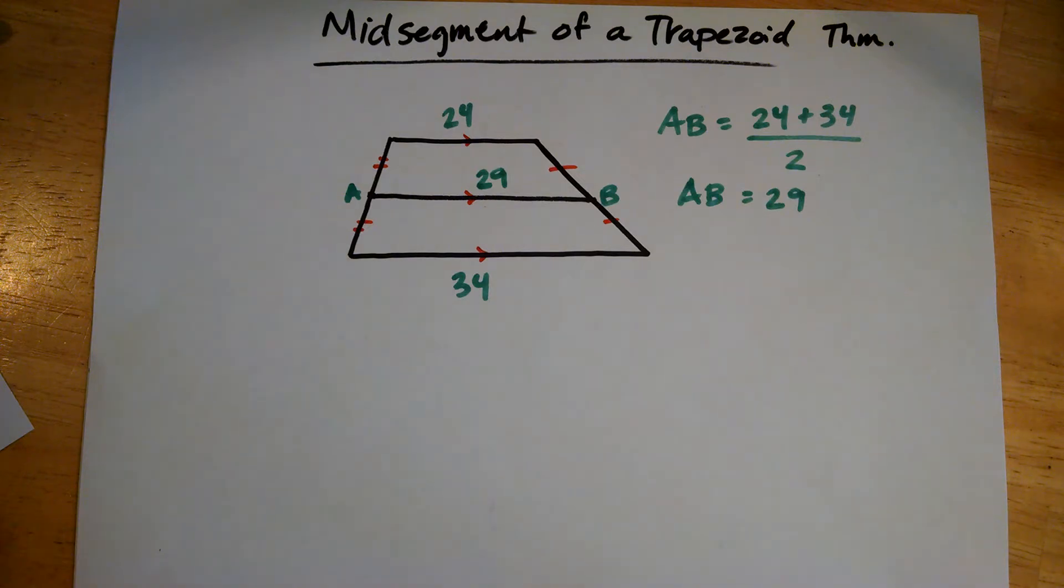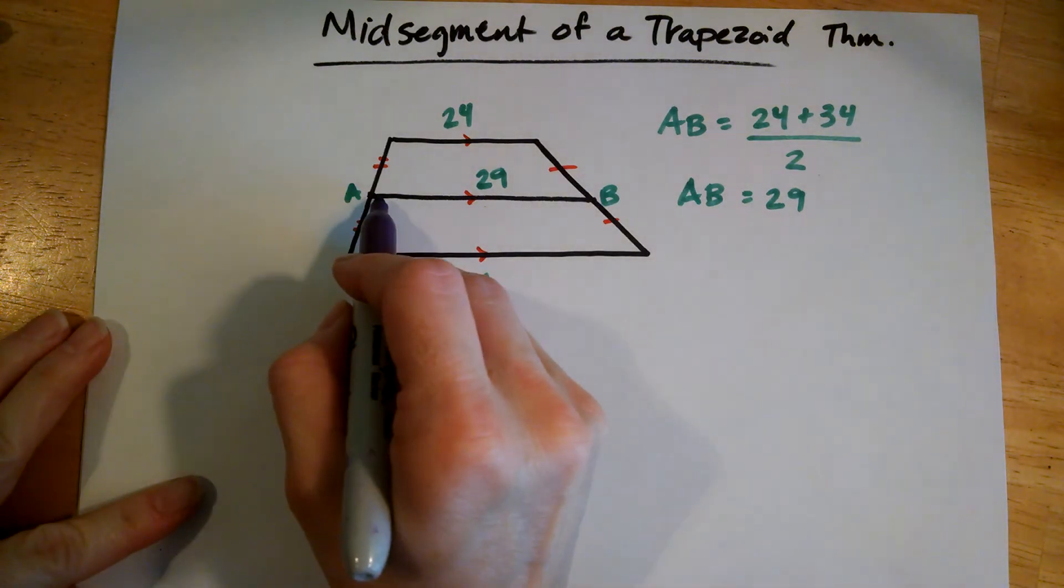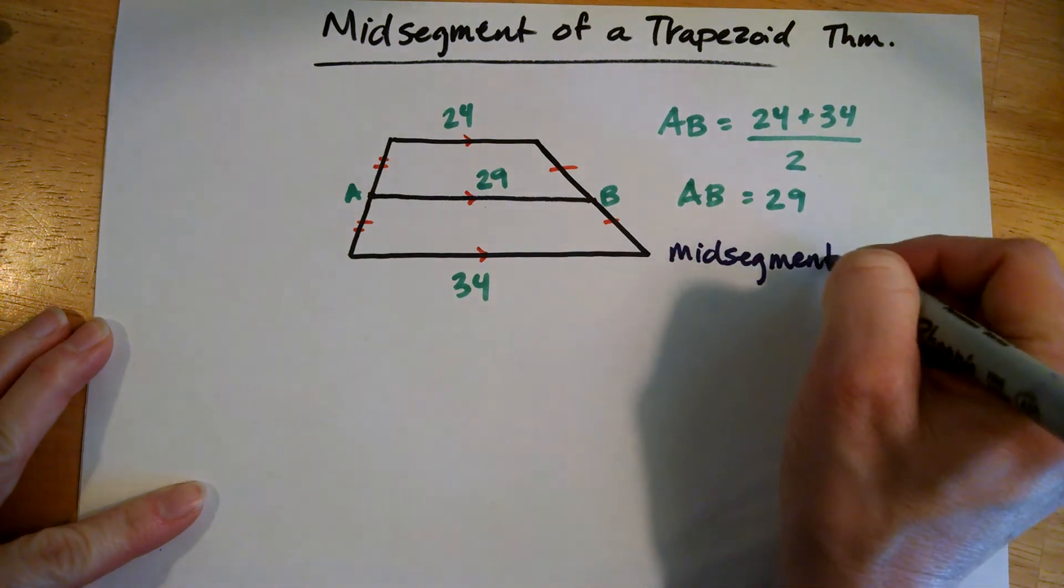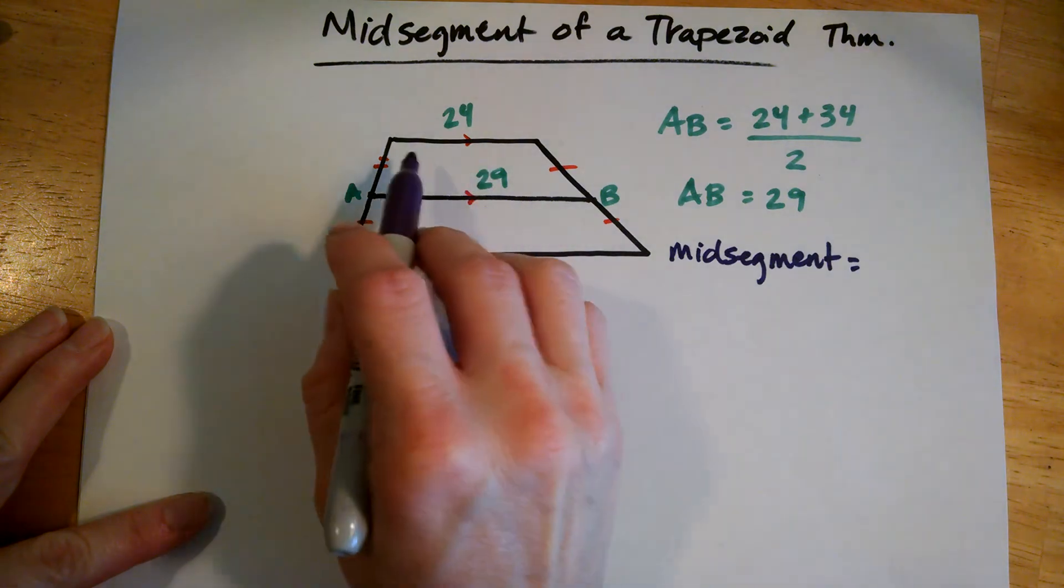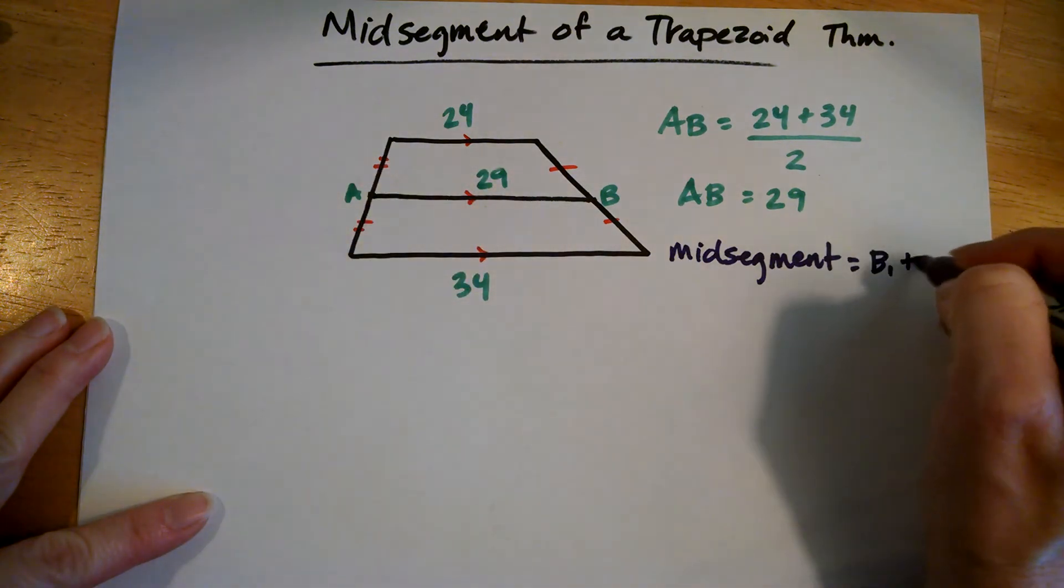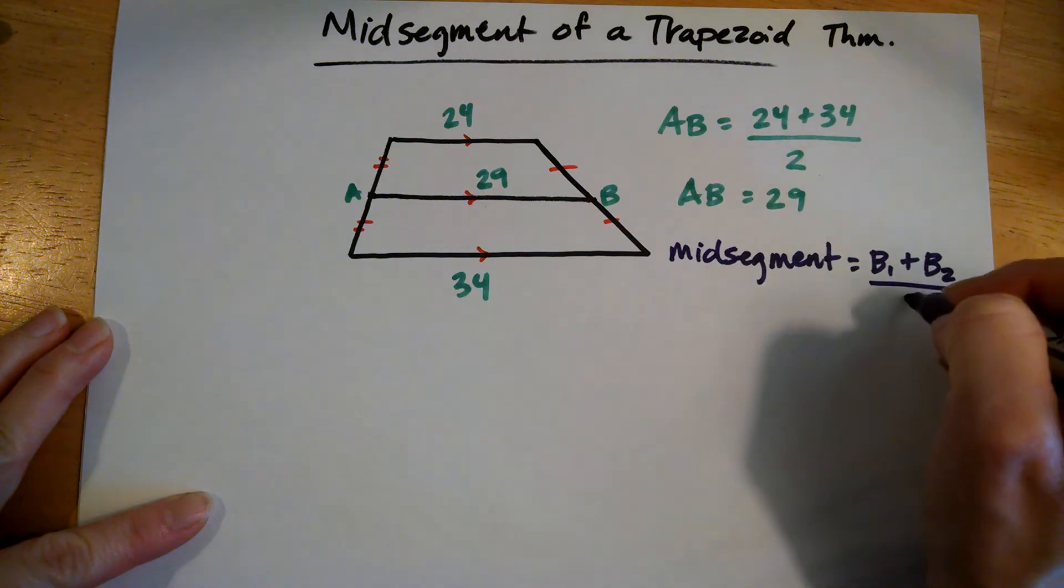And let's try something else. That was pretty straightforward, that our mid-segment is the average of our two bases. So we'll say base 1 plus base 2 over 2.